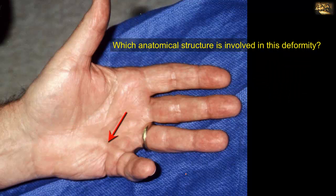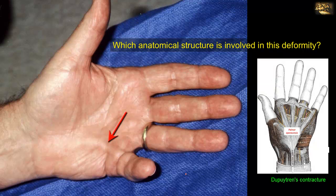Which anatomical structure is involved in this deformity? This patient has Dupuytren's contracture, a fibrosing disorder resulting in slowly progressive thickening and shortening of the palmar aponeurosis. The palmar aponeurosis is a central thickening of the deep fascia of the palm; the anatomical entity involved is a slip of the palmar aponeurosis.